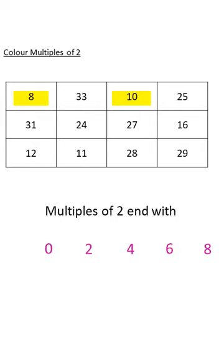The next one, 33. Is this a multiple of 2? No. Why? Because it ends with 3. Next number, 10. Yes, it is a multiple of 2 because the last digit is 0. The next, it is 25. It is not a multiple of 2.